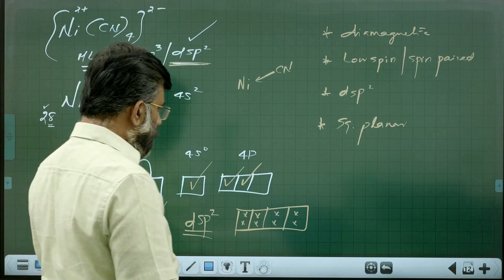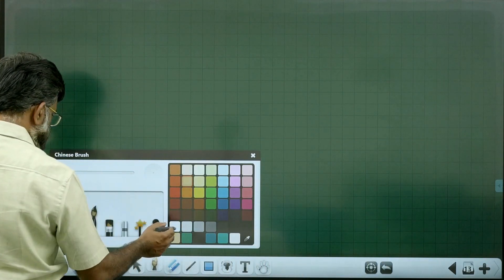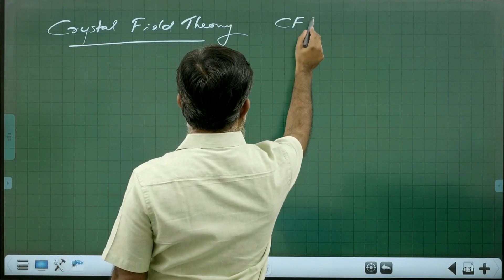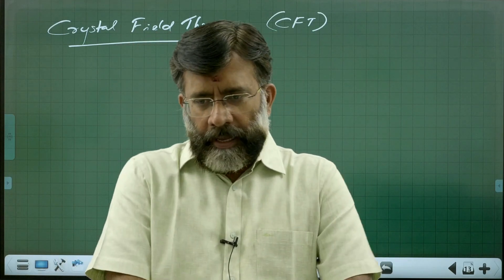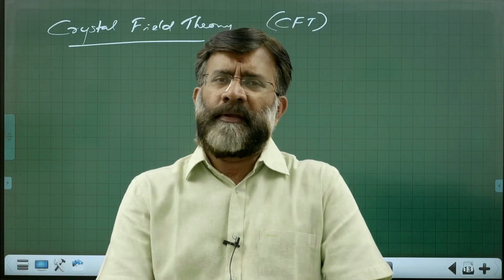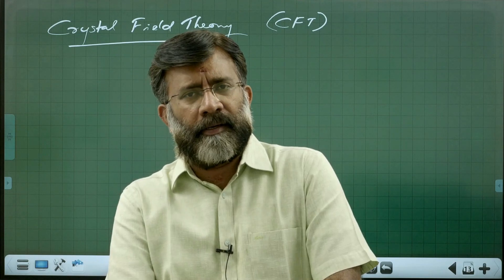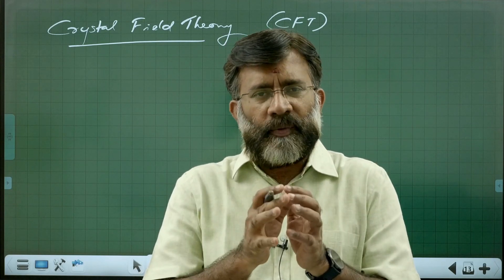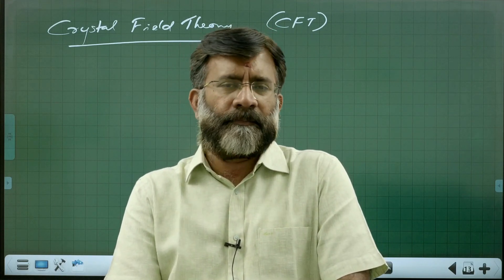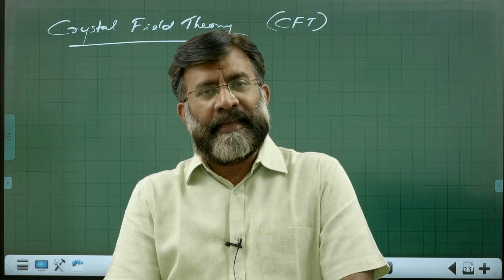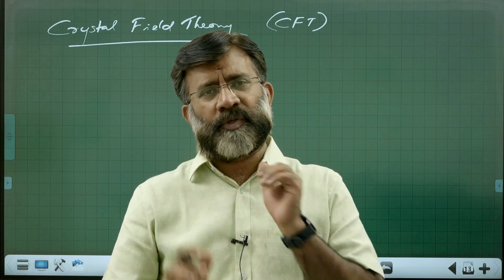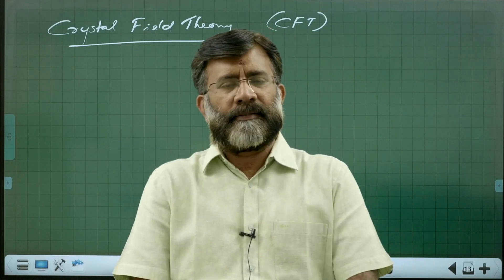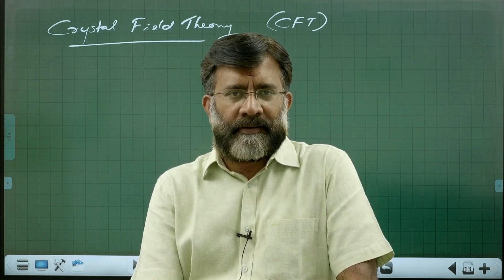Now switching to crystal field theory (CFT). In this theory, an ionic picture is given — the central metal atom and ligands are assumed to be like ions, with the central metal atom considered as a positive center and the surrounding ligands as a negative center. The complex is pictured as a positive sphere surrounded by negative spheres.